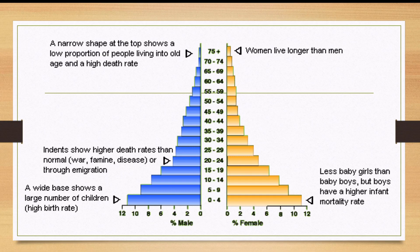The age groups are placed in the middle, running from 0–4, 5–9, 10–14, 15–19, all the way to 75+. The wide base shows a large number of children, indicating a high birth rate. Indents — where the bars begin to shrink moving upward — appear as it gets toward the top.